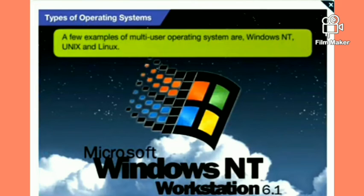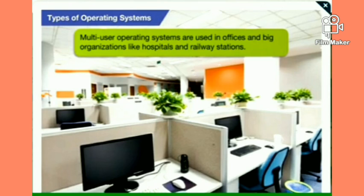A few examples of multi-user operating systems are Windows NT, UNIX, and Linux. Multi-user operating systems are used in offices and big organizations like hospitals and railway stations. In our next class, we will learn more about operating systems.